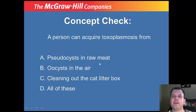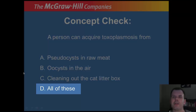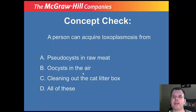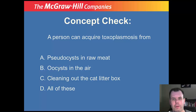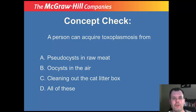Quick question: how can a person acquire toxoplasmosis — through raw meat, the air, or cleaning out the cat litter box? If you said all of these, you're correct. These things travel in the air, can be breathed in, and can also be in raw meat. If you're pregnant, avoid cat litter boxes entirely — even the area around them, since the oocysts can become airborne.